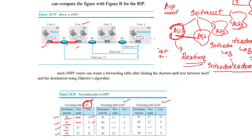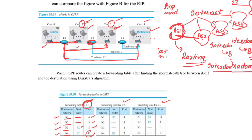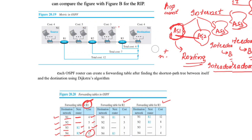For R1 to reach N3, it goes via router R2, with cost 5 (N2) + 3 (N3) = 8, and the next router is R2. For R1 to reach N4, it also goes via R2 with cost 5 + 3 + 4 = 12, and the next router is again R2.